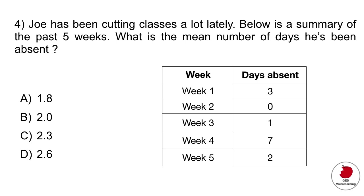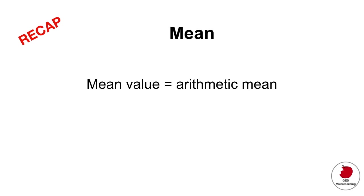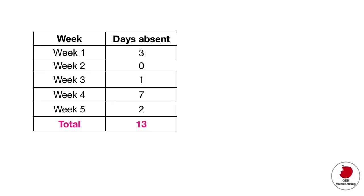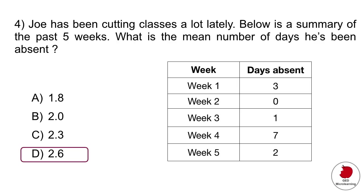Question 4 is a statistics problem. Joe has been cutting classes a lot lately. Below is a summary of the past five weeks — what is the mean number of days he's been absent? Mean is an arithmetic mean or average. You add the total days absent, which is 13, and divide by the number of weeks — 5 — giving you 2.6, which is answer D.